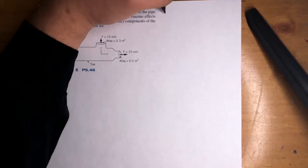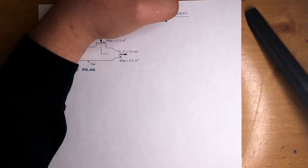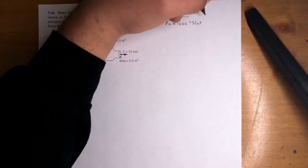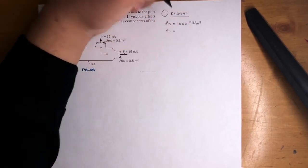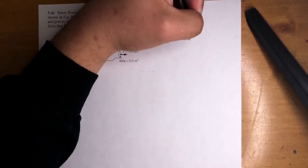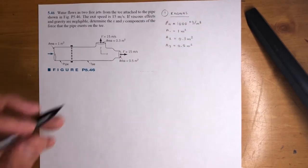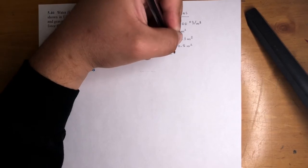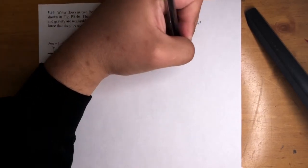Like always, we've got water, so density of water is 1,000 kilograms per meter cubed. They gave us areas, so let's write those down. A1 equals 1 meter squared, A2 equals 0.3 meters squared, A3 equals 0.5 meters squared. Let's label points 1, 2, and 3. We've got V2 at 15 meters per second and V3 at 15 meters per second as well.